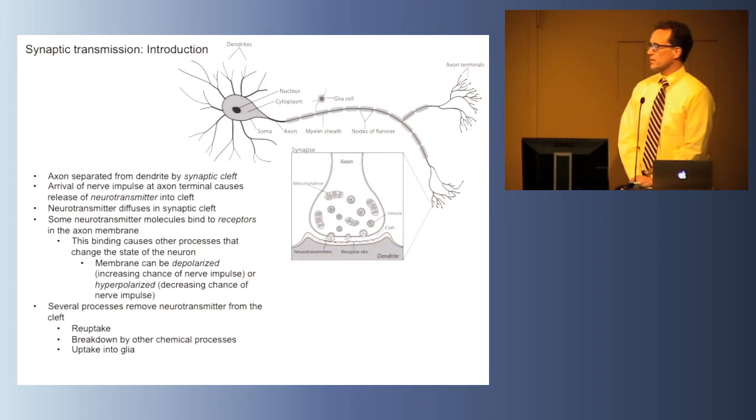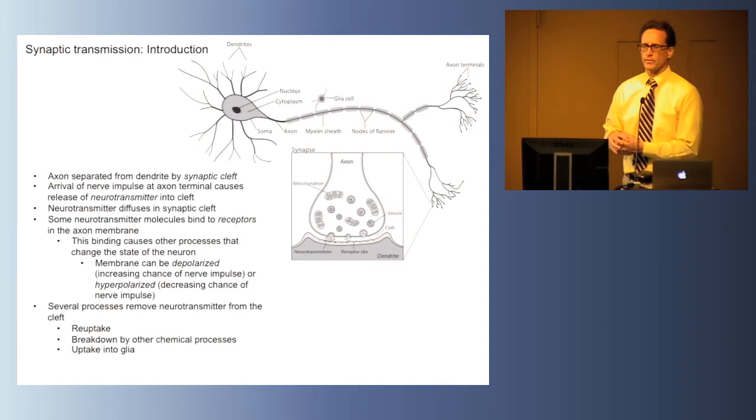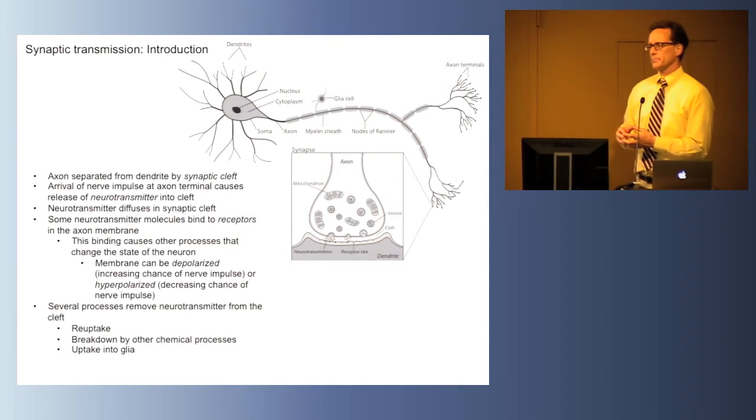The tip of the axon forms a specialized ending. It's comprised of subcellular structures called mitochondria that are the energy source for cell processes, and synaptic transmission requires a lot of energy. Also in the end of the axon are structures known as vesicles. These are cross sections of bubbles, and these vesicles are containing the neurotransmitters that this particular neuron is going to release.